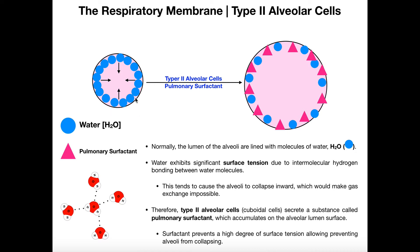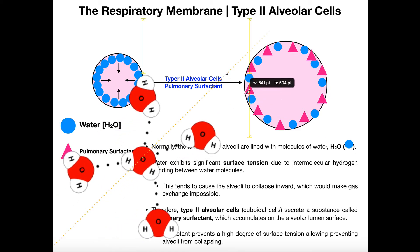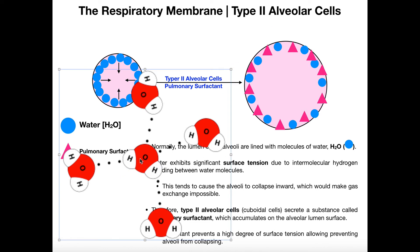Now, inside the alveolus in its lumen, there are going to be molecules of water that line the surface. These blue circles are molecules of water. Water, as we know — if you blow up this picture a little bit — water will actually hydrogen bond with itself. Hydrogen bonds individually are not super strong, but collectively, if you have a lot of molecules of water, hydrogen bonding is very, very powerful.